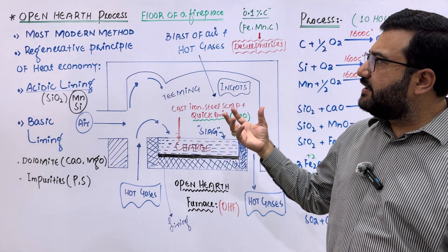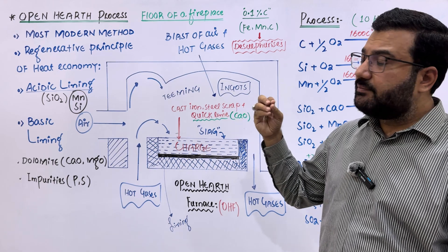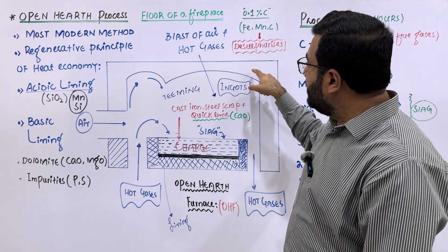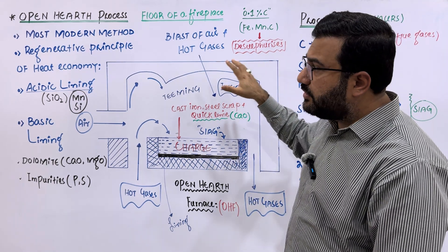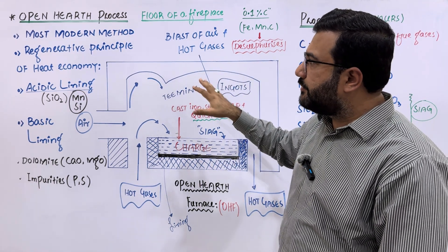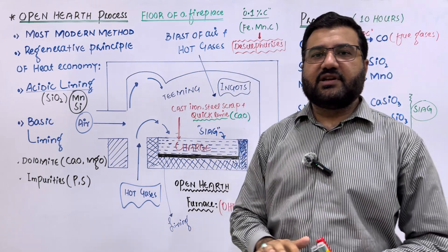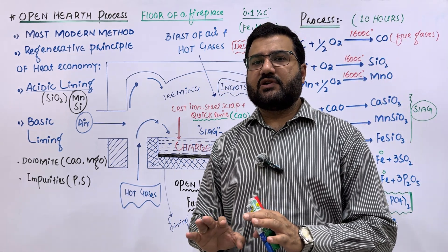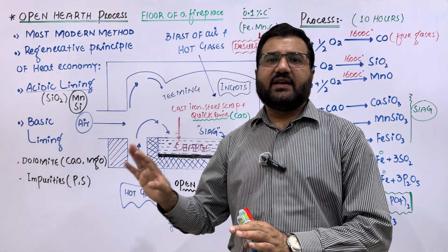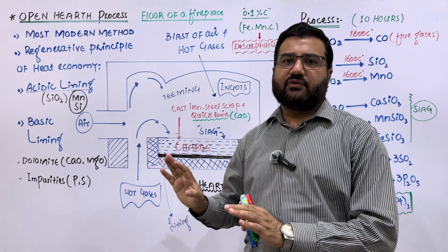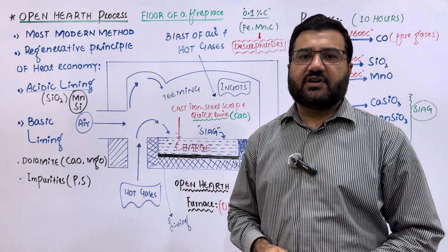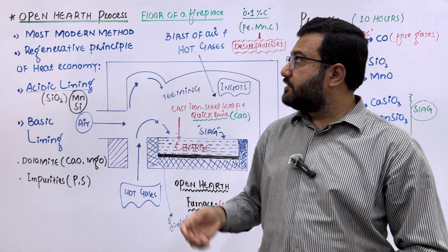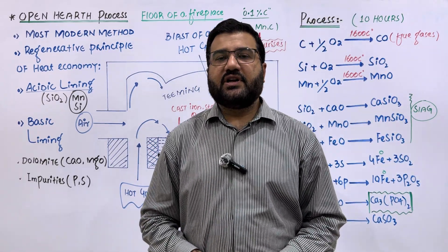In this way you can get steel. An important point to remember is that although this is a slow process, the percentage of carbon is under control. This process can be terminated at any stage where the required percentage of carbon in the steel is obtained. That was all about the open hearth process.